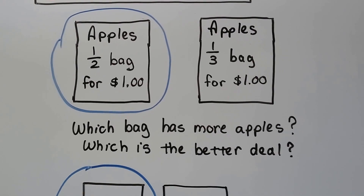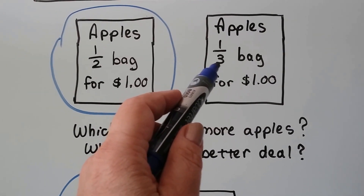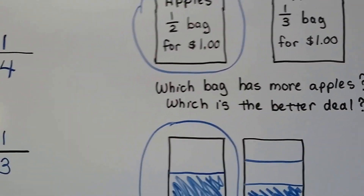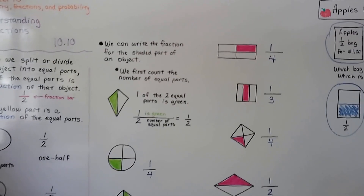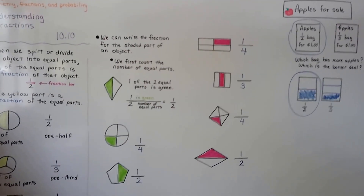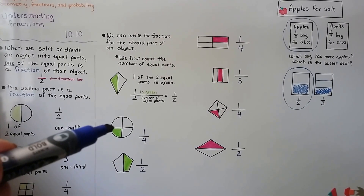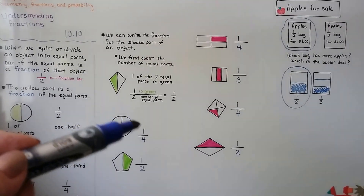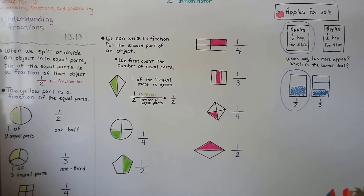The bigger the bottom number is, the more parts there are. We're going to move on and keep talking about fractions, but now we're going to talk about fractions that have more than one part shaded or colored — so the top number isn't going to be a one, it might be more than one.